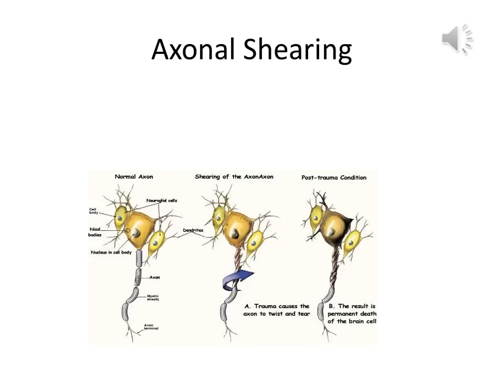The gray and white matter of the brain contain different levels of water content and have different densities. Consequently, they move at different velocities, which results in shearing or tearing of axons at the junction where gray and white matter come together. This axonal shearing does not always show up in standard medical imaging, but manifests typically as elevated delta in QEEG analysis.